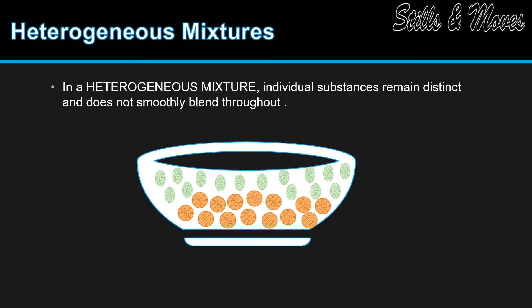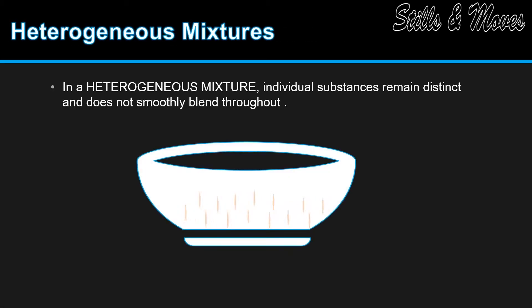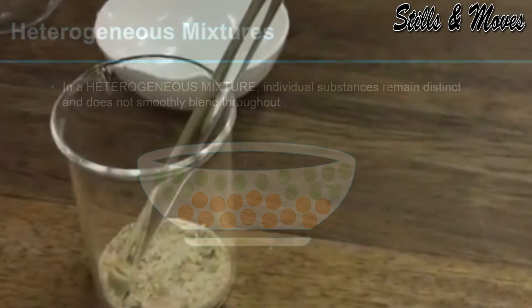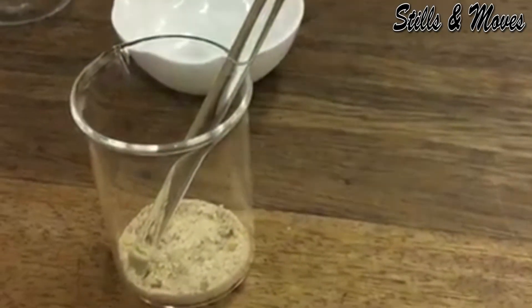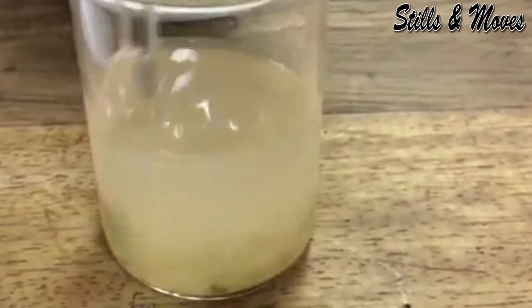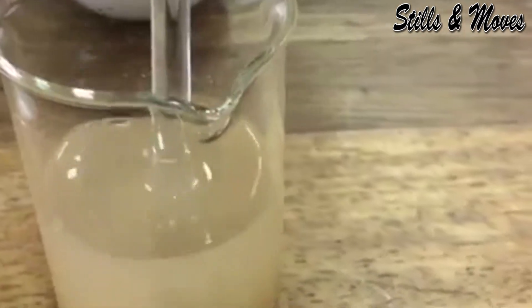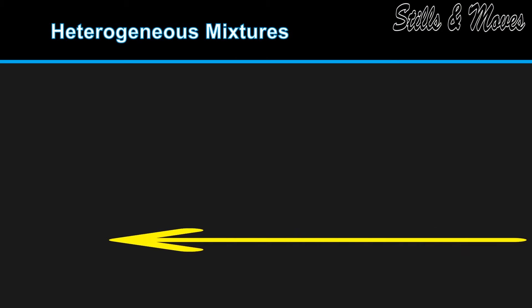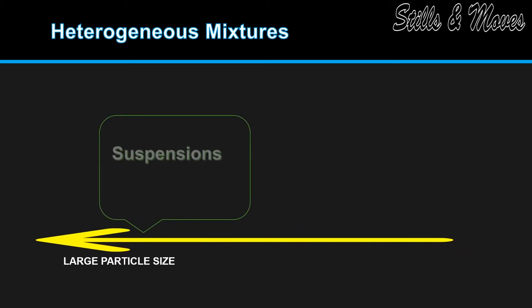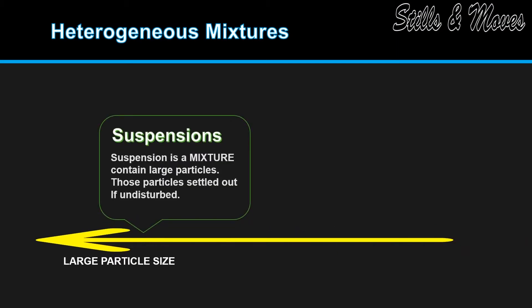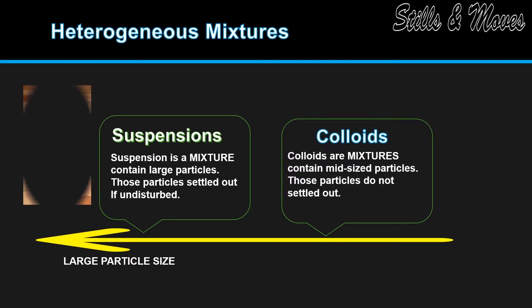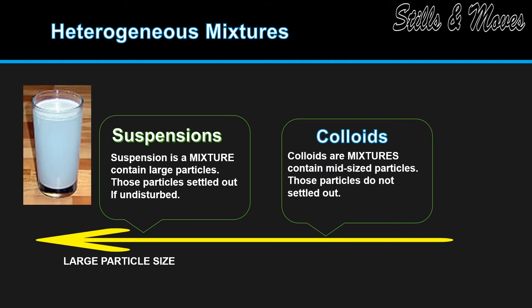In a heterogeneous mixture, individual substances remain distinct and do not smoothly blend throughout. Heterogeneous mixtures can further divide into two groups: suspensions and colloids. A suspension is a mixture containing large particles; those particles settle out if undisturbed. Colloids are mixtures containing mid-sized particles.